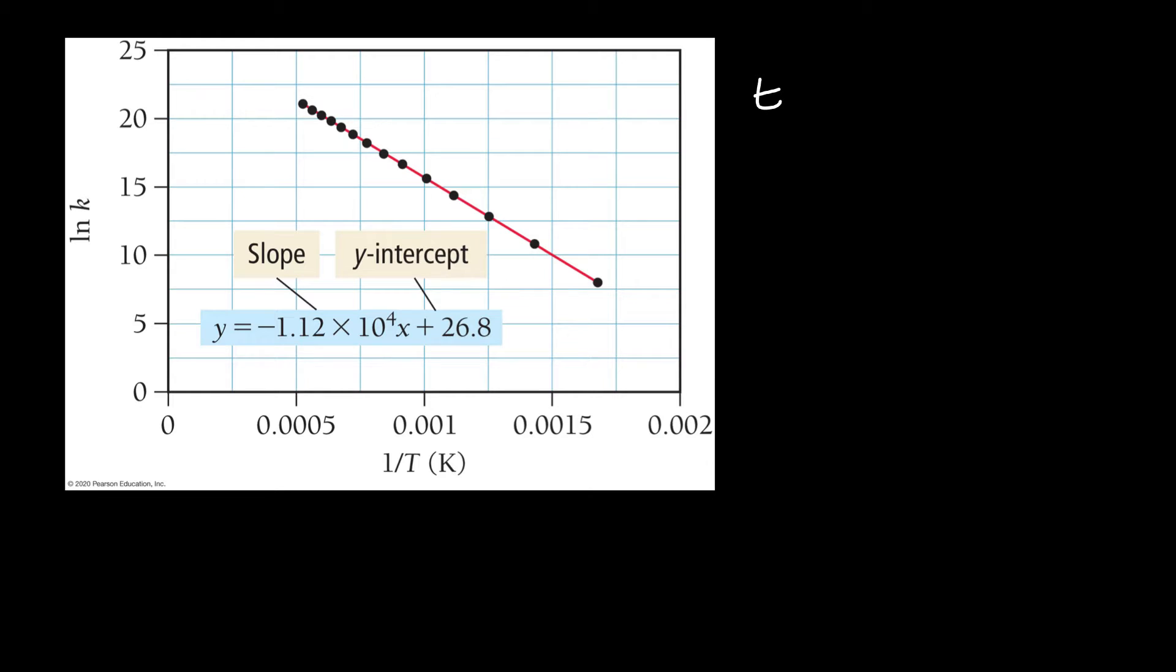So what do we want? We want the activation energy. We know the activation energy is equal to minus the gas constant times by the slope. So the gas constant that we want to use has values of joules per mole Kelvin. So it's 8.3145 joules per mole Kelvin. And you might say, well, why aren't we using the liter atmosphere per mole Kelvin one? Well, if you do that, you get an energy in liter atmospheres. And it's normal to measure energy in chemistry in joules. So we just kind of pick our gas constant that gives us our units of energy that we're used to, that of a joule.